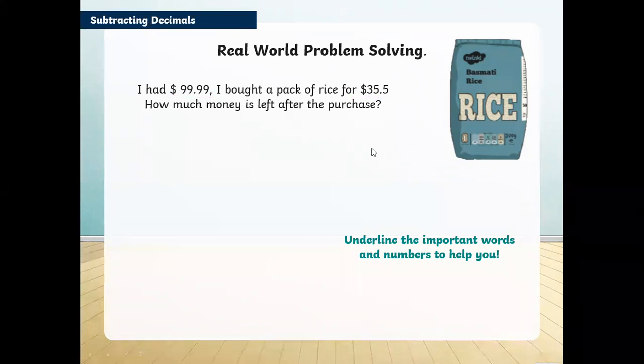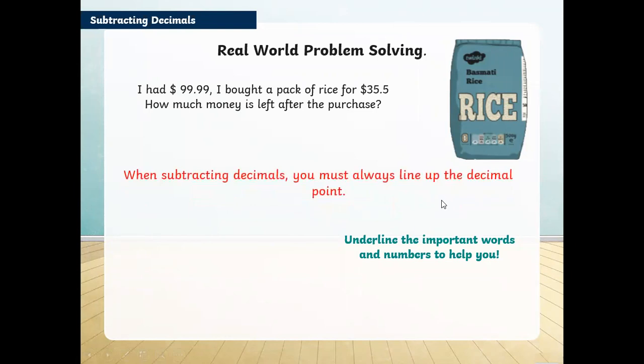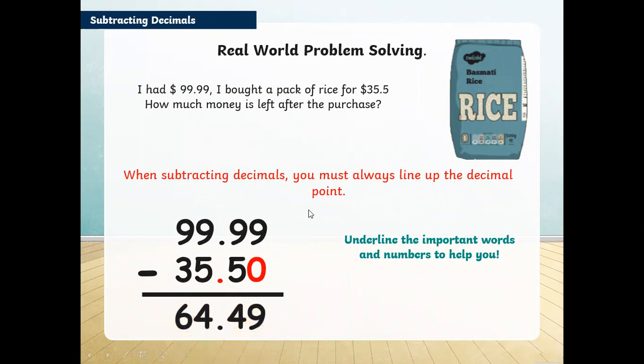I'm going to write my numbers by making sure the decimal points are lined up like this. If a 0 is missing, I'll put the placeholder 0. I'll start from the right side and start subtracting. 9 minus 0 is 9, 9 minus 5 is 4, 9 minus 5 is 4 again, and 9 minus 3 is 6. The amount of money I have left is $64.49.